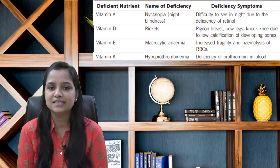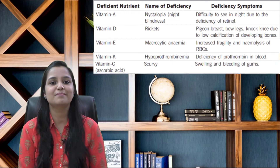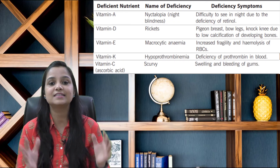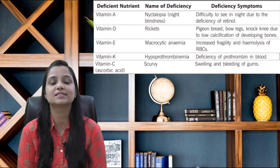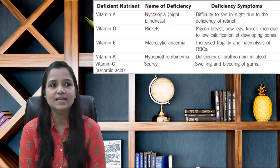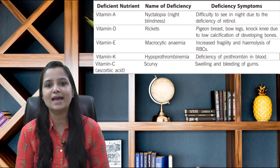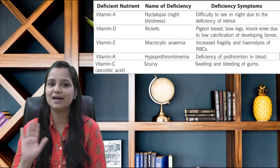After that, vitamin C — its common name is ascorbic acid. Its deficiency causes scurvy, and its symptoms are swelling and bleeding of gums.